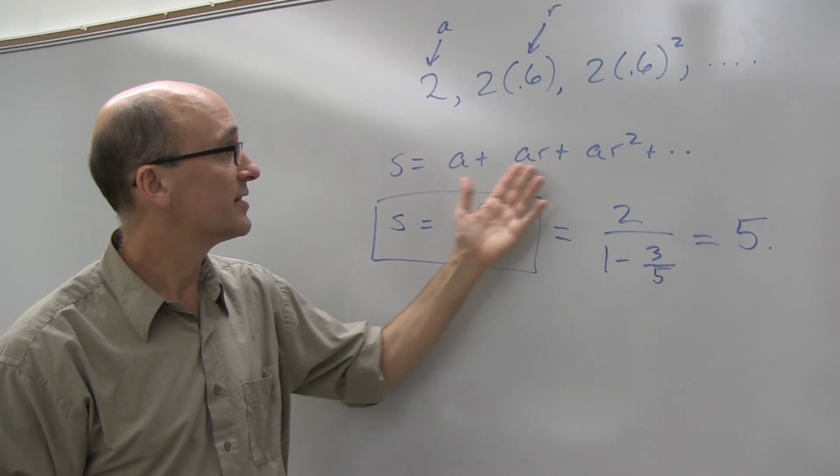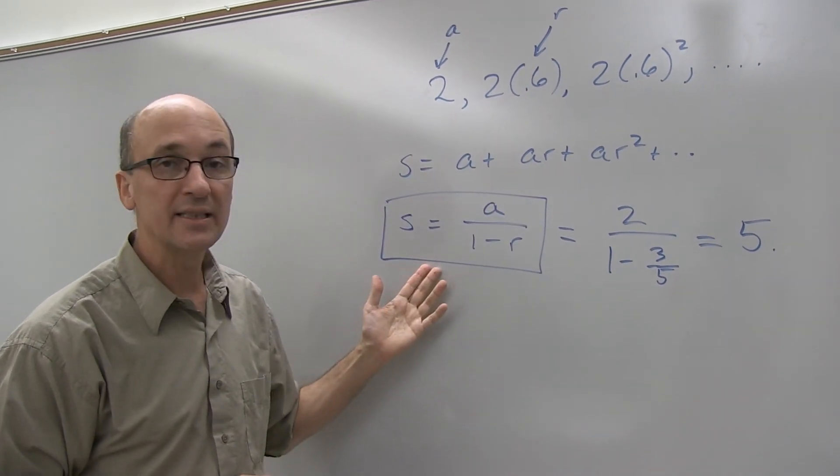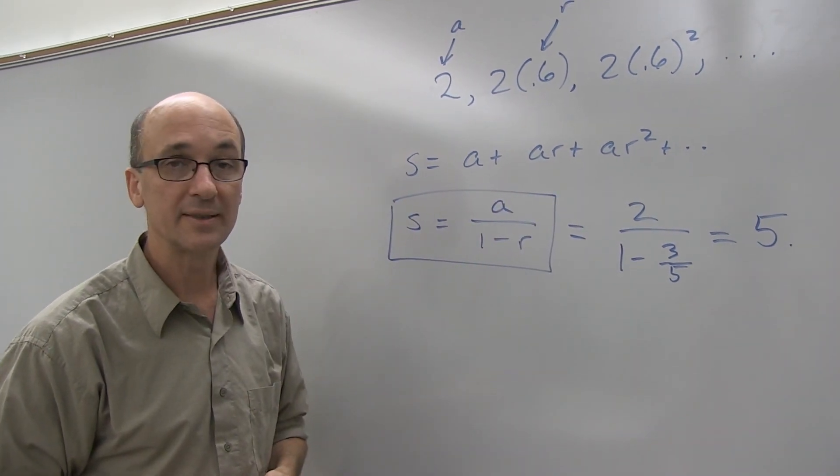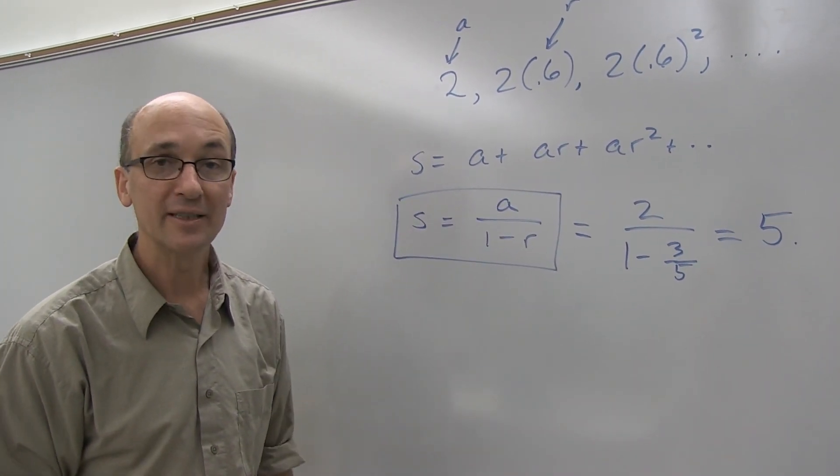That's called the geometric sequence. And we have found a very nice shorthand formula for summing the terms of a geometric sequence. That's the story of Zeno's paradox.